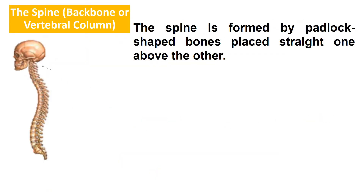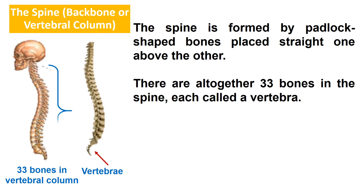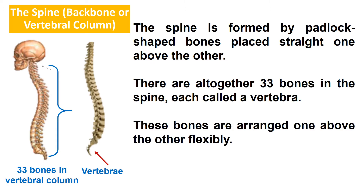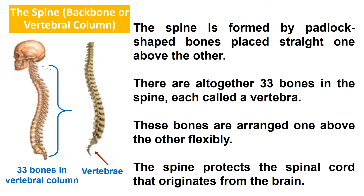The spine is formed by padlock-shaped bones placed straight one above the other. There are altogether 33 bones in the spine, each called a vertebra. These bones are arranged one above the other flexibly. The spine protects the spinal cord that originates from the brain.